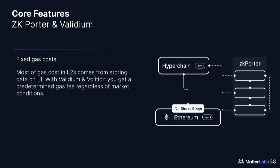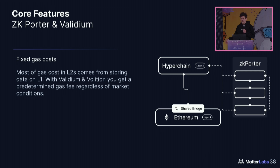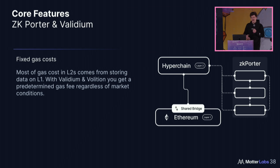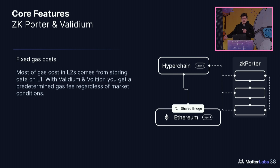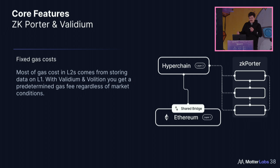With Validium soon and Porter later, you also get essentially fixed gas costs for transactions. Right now the vast majority of your fee for making a transaction is publishing data onto L1. Instead, we can publish the data somewhere else using zero-knowledge proofs, and you get more or less a flat trading fee regardless of how much Ethereum usage goes up. It's always going to be one cent or less for every single transaction, forever. It's actually scalable and sustainable, unlike some other blockchains that subsidize fees — that's the real fee.